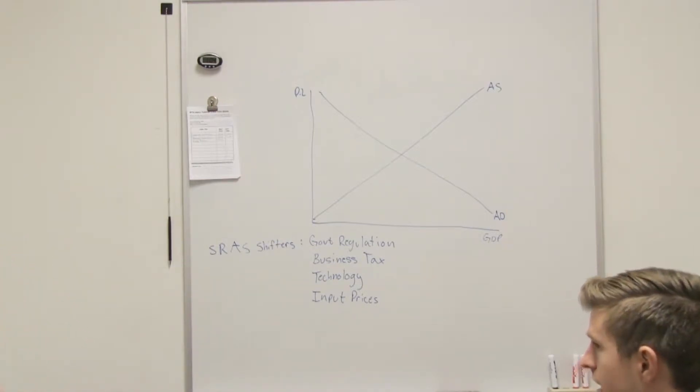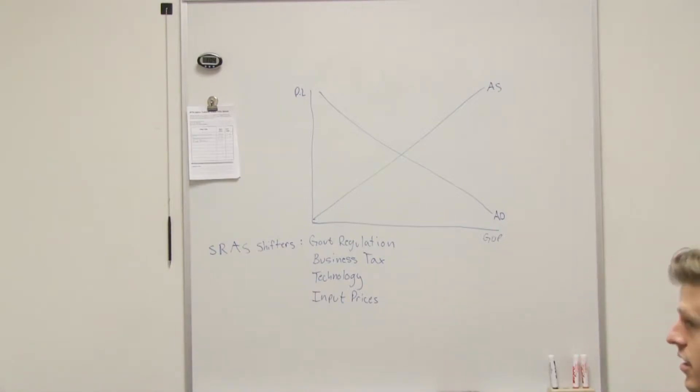Because businesses who supply us, do consumers supply anything? No, we only buy, we demand. Same thing with supply and demand. Like businesses supply, consumers demand. The only difference here is it's aggregate. It's over the whole economy. It's not just like one pizza market or one market for cars. It's over everything.